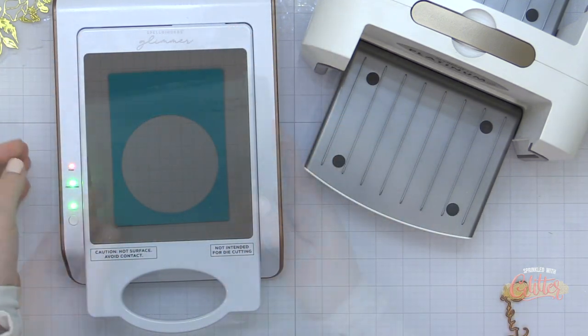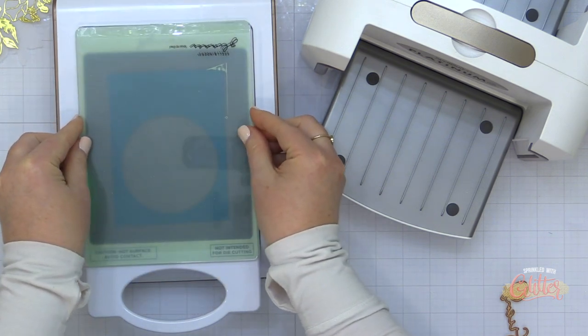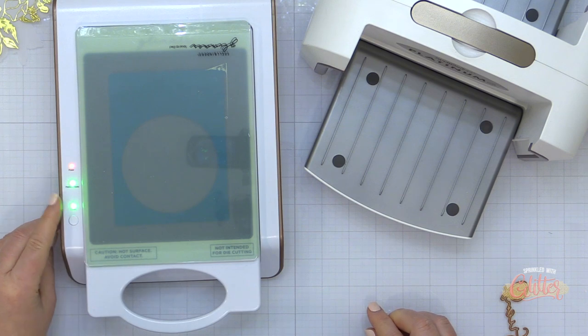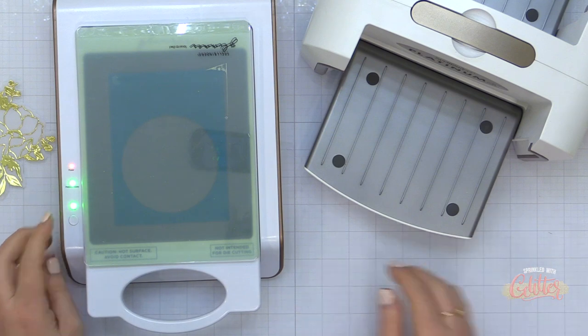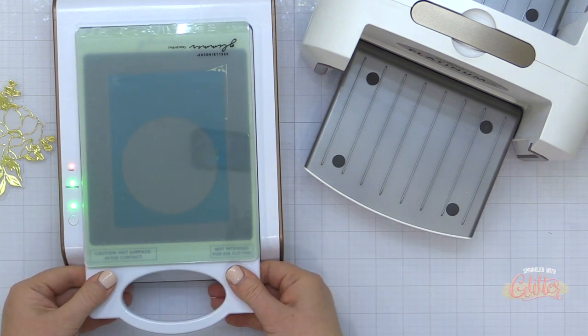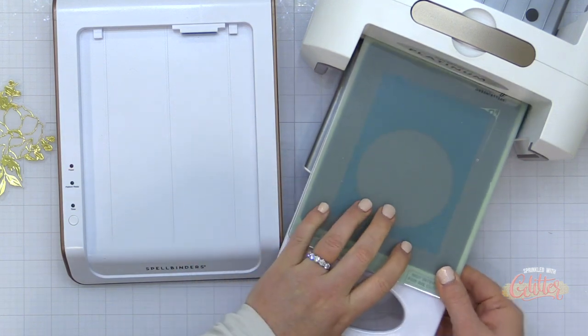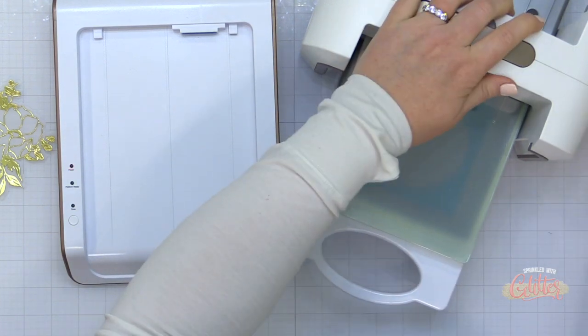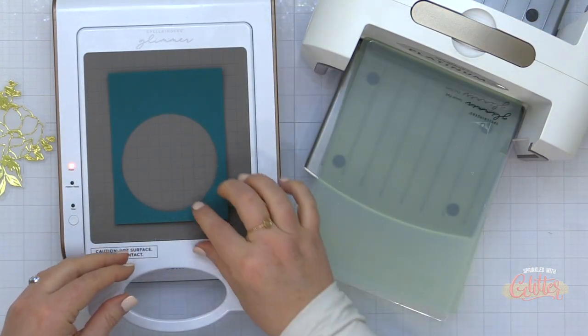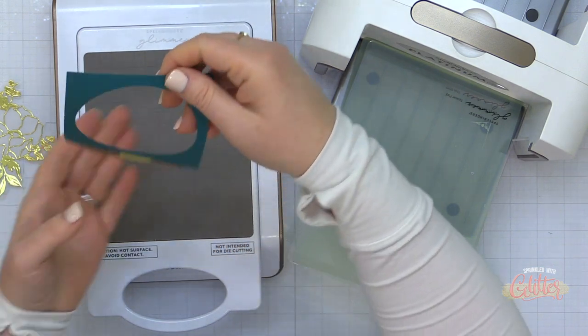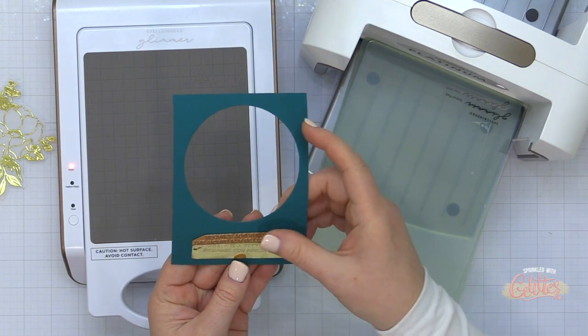So once I have that hot foil plate placed on my card front and taped in place, I flipped it back. I added my champagne colored hot foil then I flipped it back down into place and placed it onto my glimmer platform and set the timer. Now once the timer's done that timer light will be solid instead of blinking. I can remove the platform from the base and run that through my Platinum 6 die cutting machine and that's going to apply pressure and press the foil onto my card project.